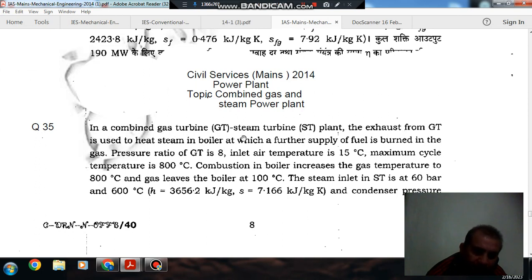In a combined gas turbine steam turbine plant, the exhaust from GT is used to heat steam in boiler at which a further supply of fuel is burned in the gas. Pressure ratio of GT is 8. Inlet air temperature is 15°C. Maximum cycle temperature is 800°C. Combustion in boiler increases the gas temperature to 800°C and gas leaves the boiler at 100°C.